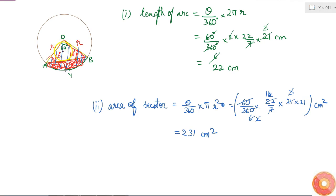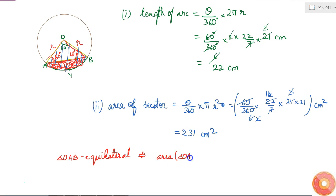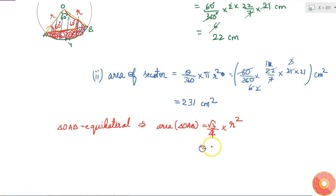Since all three angles are 60 degrees, triangle OAB is equilateral. The area of an equilateral triangle is root 3 over 4 times side squared. Here the side equals the radius, so area equals root 3 over 4 times R squared, which is root 3 over 4 into 21 squared, giving 441 root 3 over 4 cm squared.